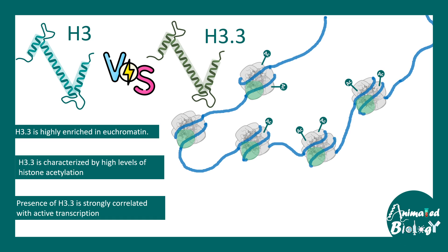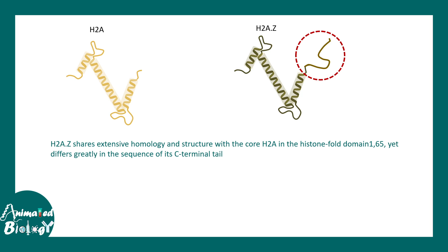There are several histone variant types. H3.3 is highly enriched in euchromatin and is characterized by very high levels of histone acetylation. The presence of H3.3 is strongly correlated with transcription initiation. Similarly, another variant H2A.Z is associated with the transcription start site. H2A.Z is a variant of the H2A histone.